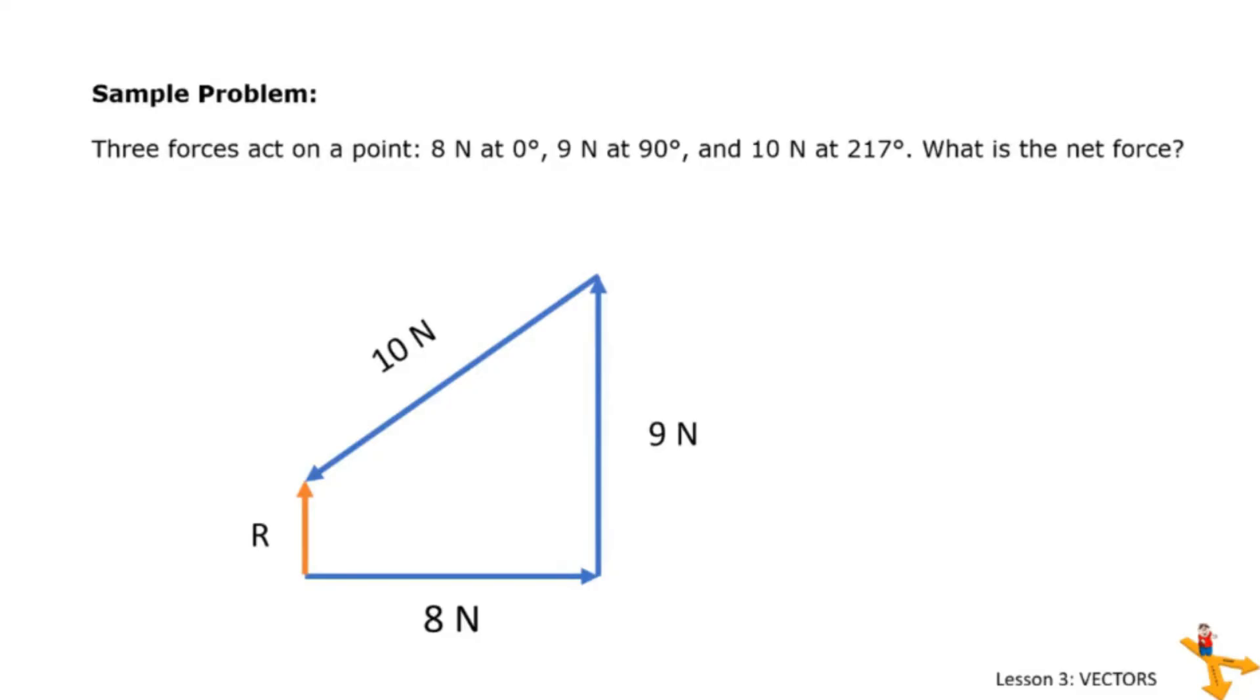Observe that the shape formed is not a triangle, not even a square. So we cannot use the Pythagorean theorem and the law of cosines. To solve this, let us consider the summation of the forces x and y components. For the summation of the forces x component, we write F sub x. All magnitudes directed to the right are positive, while all that is directed to the left will be negative. We write Fx equals positive 8 plus 0, because the 9 newton force has no x component.